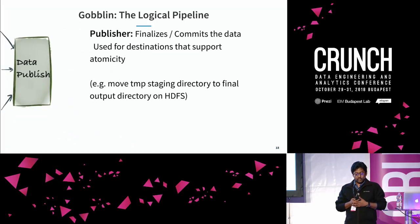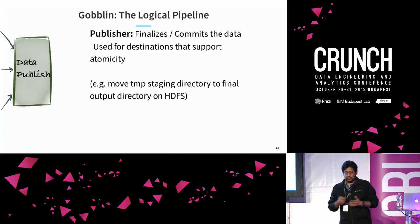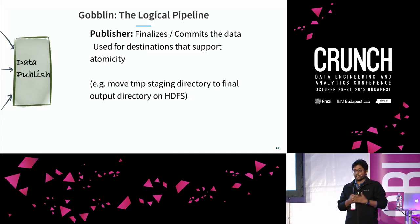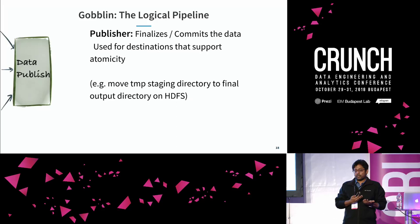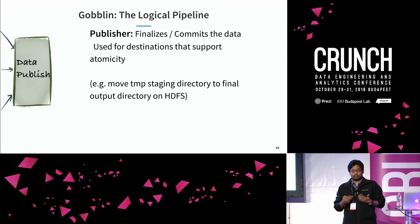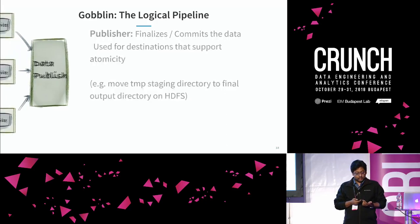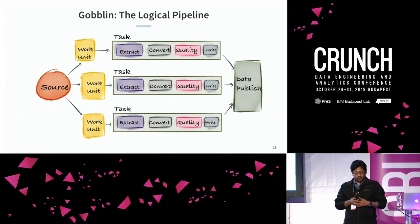The data publisher, if your destination supports exactly-once semantics, can publish your data: first write to a staging location, then when all tasks are complete, move data from staging to the final location — for example, a copy activity from one cluster to another. That was a brief overview of Goblin's logical pipeline architecture.